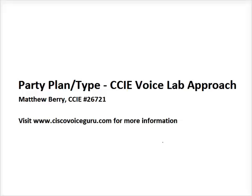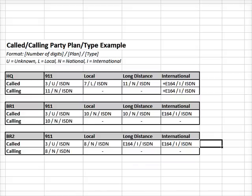Hey guys, this is Matthew Berry, CCIE number 26721, and in this five-minute video, I'm going to be covering the CCIE Voice Lab approach that I used when it comes to doing your dial plan, and especially when this concerns doing party plan and type. These values are just examples, but this is the method that I used when I took my lab on August 16, 2010, and passed my lab on the first time.